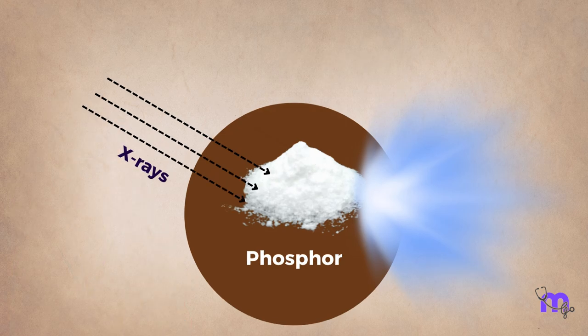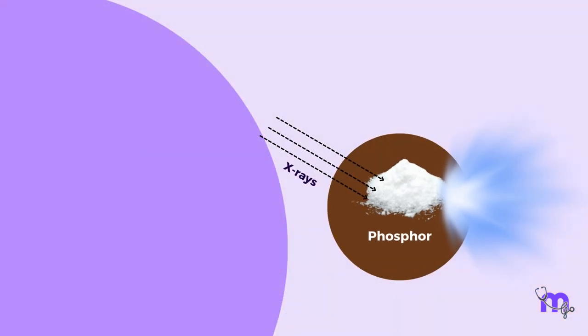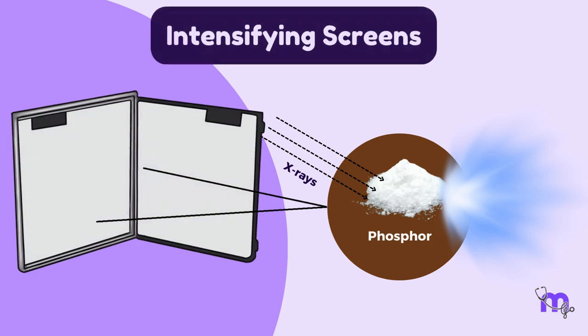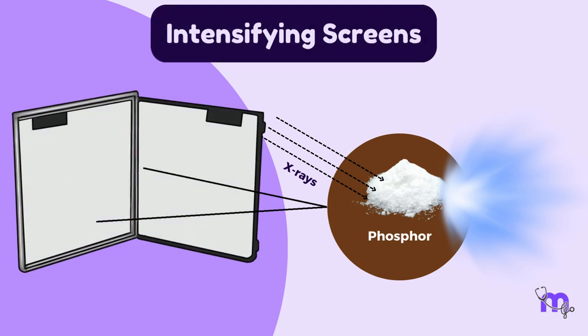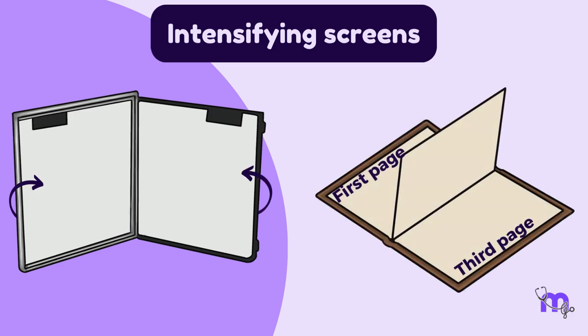It was observed that the intensity of this fluorescence was proportional to the X-ray energy. Coming back to the present, intensifying screens are devices that contain phosphor, converting X-ray energy into visible light. The intensifying screens are installed inside the front and back covers of the cassette, much like the first and third page of the book being stuck to the front and back cover of the book.